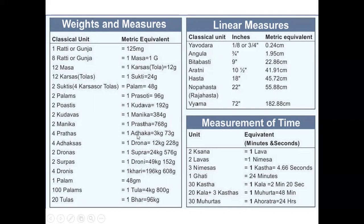2 Manik is equal to 1 Prasthi — Prasthi you may hear often — which is 768 grams. Then 4 Prasthas is equal to 1 Adhaka, that is 3 kilos and 73 grams. 4 Adhakas becomes 1 Drona, that is 12 kilos 228 grams. 2 Dronas is equal to 1 Shupra, that is 24 kilos. Nowadays nobody is using these larger units. Some words you might have heard: Gunja, Mash, Tola, etc. Also, 1 Pala equals 40 grams, 100 Palams equals 1 Tula at 4 kg, and 20 Tulas equals 1 Bhara at 96 kg.